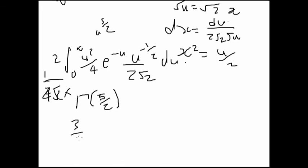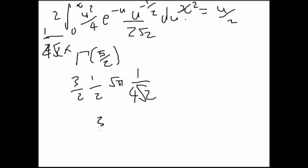Times by all of this stuff. Gamma 5 halves is 3 halves times 1 half, times square root pi. 1 on 4 square root 2. Oh, that actually works. Cool. Yeah, so that's the right answer. Oh, sorry. 16 square root 2.